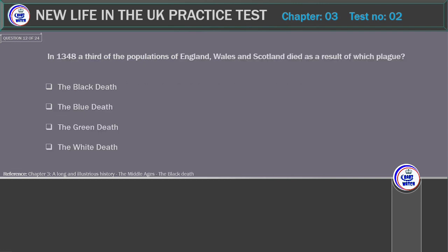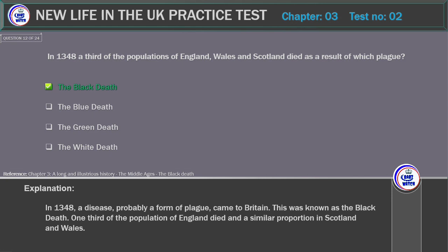In 1348, a third of the populations of England, Wales and Scotland died as a result of which plague? Options: The Black Death, The Blue Death, The Green Death, The White Death. Correct answer: The Black Death. Explanation: In 1348, a disease — probably a form of plague — came to Britain, known as the Black Death. One third of the population of England died, and a similar proportion in Scotland and Wales.